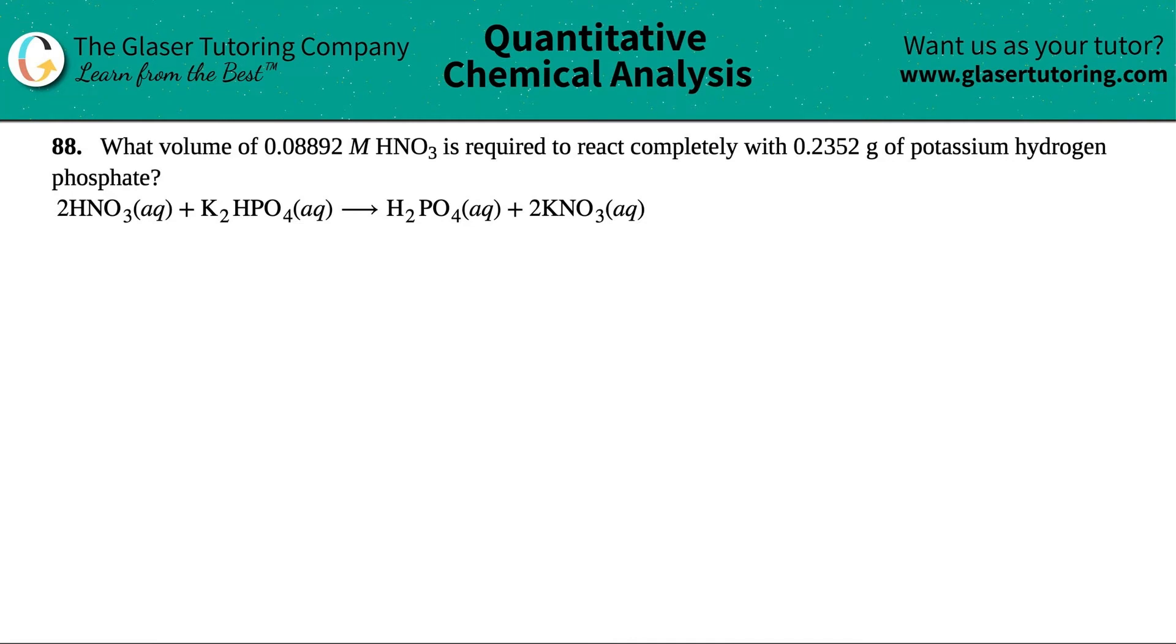Number 88. What volume of 0.08892 molarity of nitric acid, which is HNO3, is required to react completely with 0.2352 grams of potassium hydrogen phosphate? And then they give us this nice big equation here. If you guys know me by now, we always got to write the equation bigger. So let's get down to it just so that we can work with it better.